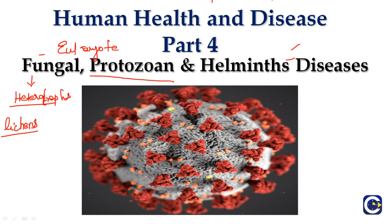Now, protozoa: are they eukaryotes or prokaryotes? Protozoans are single-cell, unicellular eukaryotic organisms, either free-living or parasitic. They feed on organic matter such as microorganisms, organic tissues, and debris. Their movement is based on flagella — some are flagellated, some have cilia, some form spores. They contain a nucleus and other cell structures, and they cause diseases in humans.